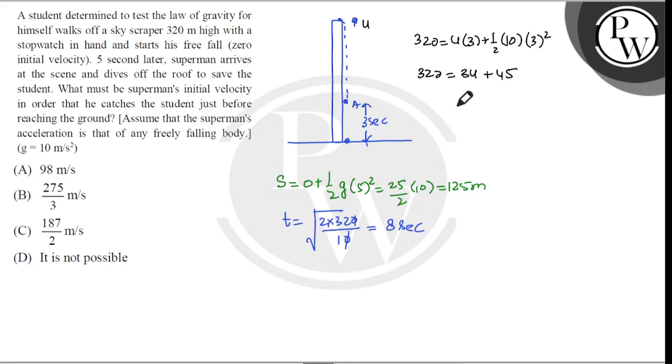So 3u equals 320 minus 45, which equals 275.